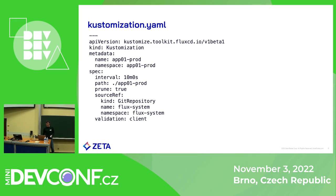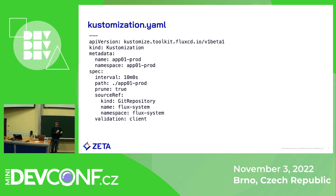We currently have six Kubernetes clusters and six flux-system repositories, so we don't manage all clusters from a single Git repository — we use one repository per cluster, purely for management and maintenance convenience.